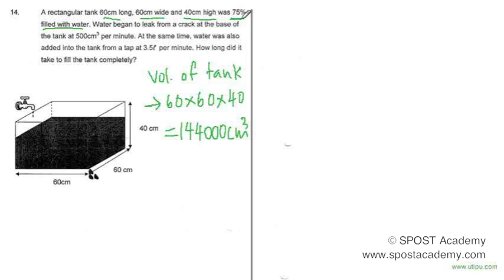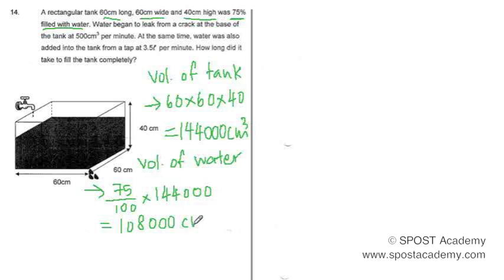It is only 75% filled. So we need to find the volume of water which would be 75 over 100 times 144,000 and we will get 108,000 cm³ of water that is in the tank.